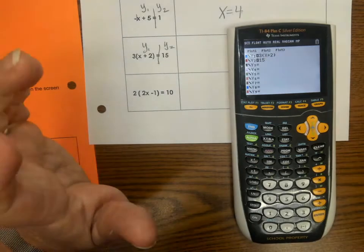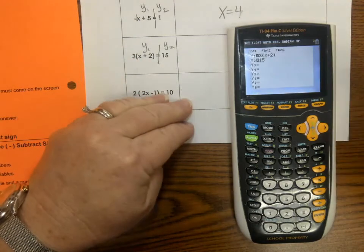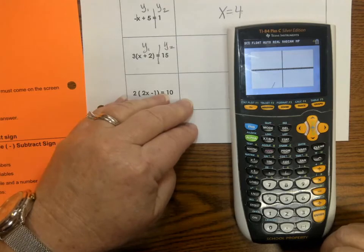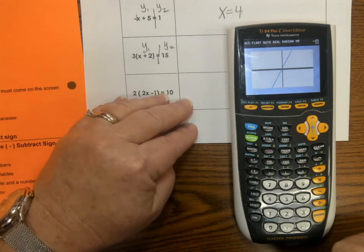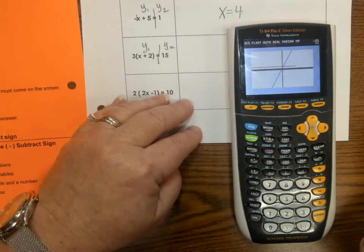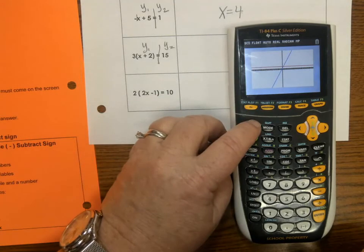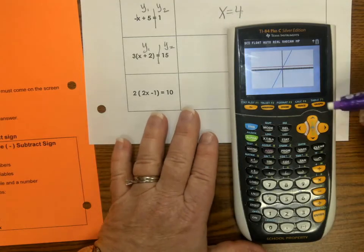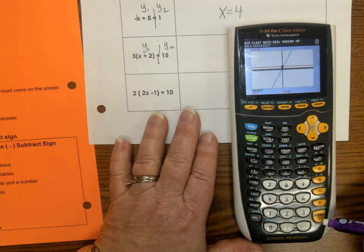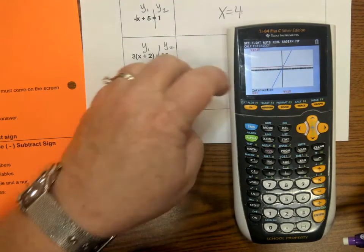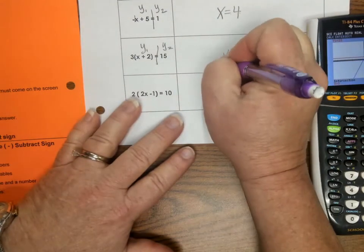Hopefully, by now, you're saying these steps to yourself. First thing you're going to press is, hope you said graph. You're going to wait for how many lines. Hopefully, you told yourself 2. Then you're going to press 2nd. Trace. 5. Enter. Enter. Enter. Until you see the word intersection. It says X is equal to 3. X is equal to 3.